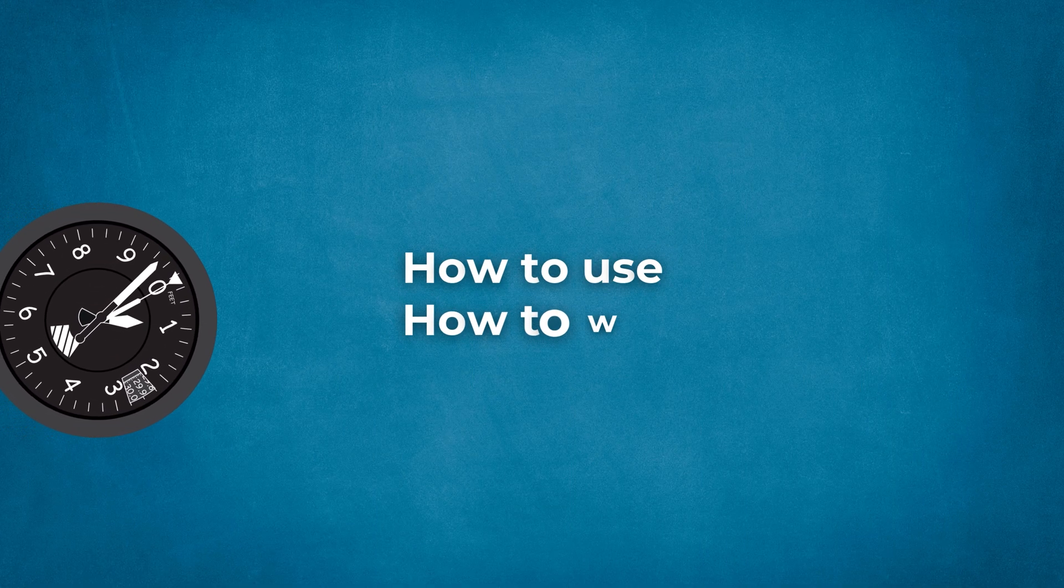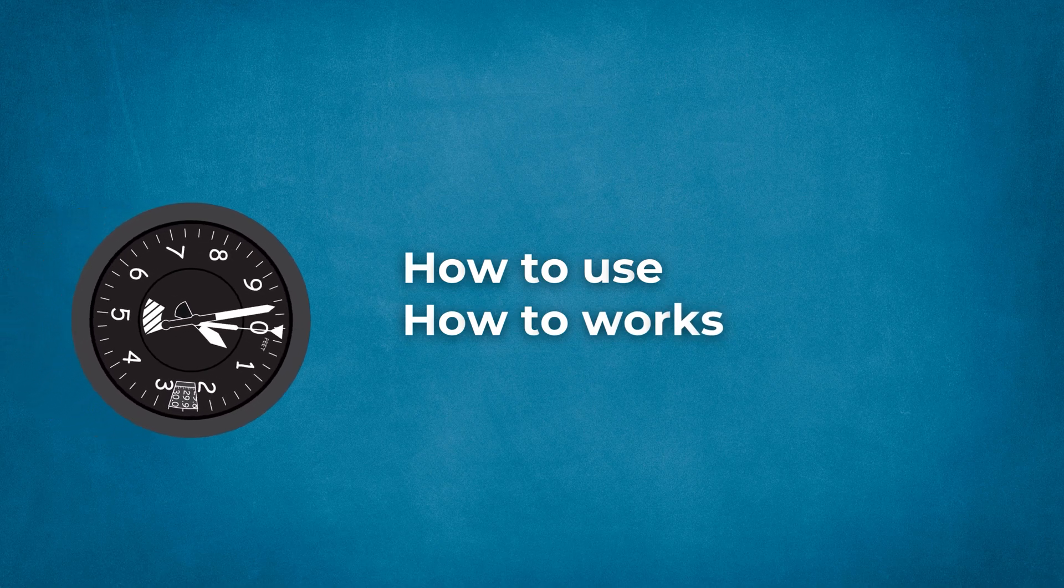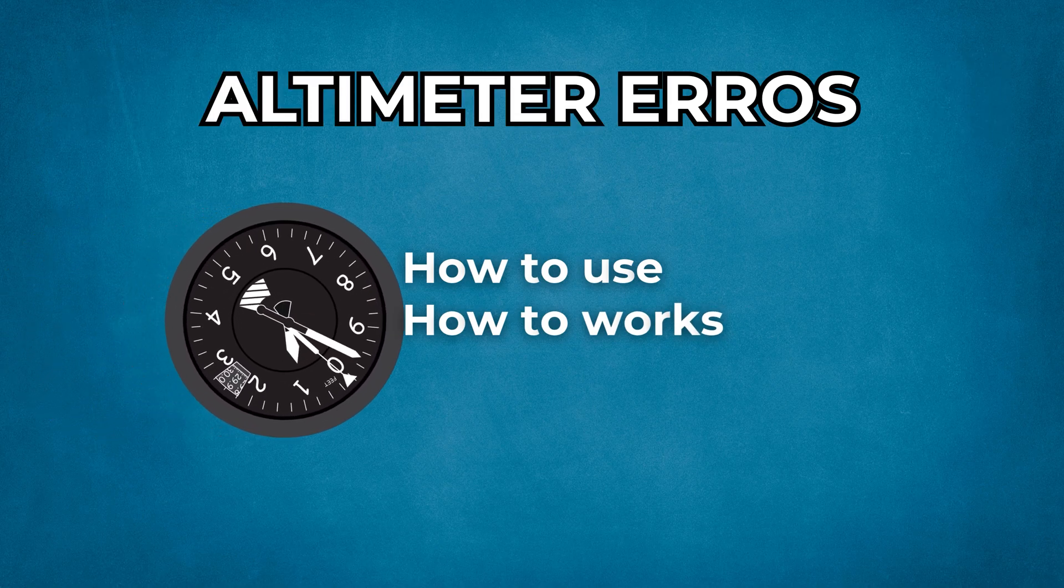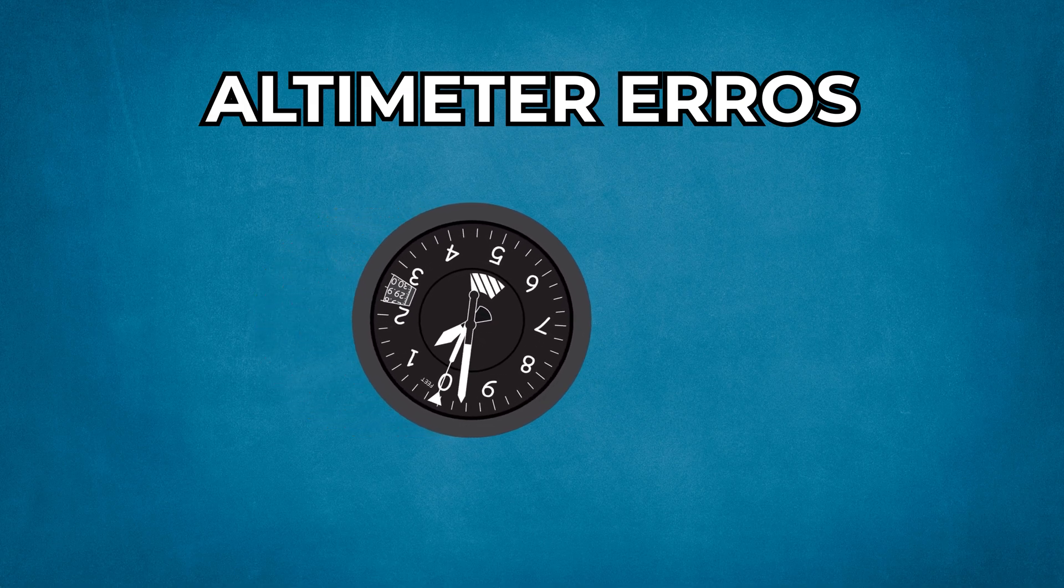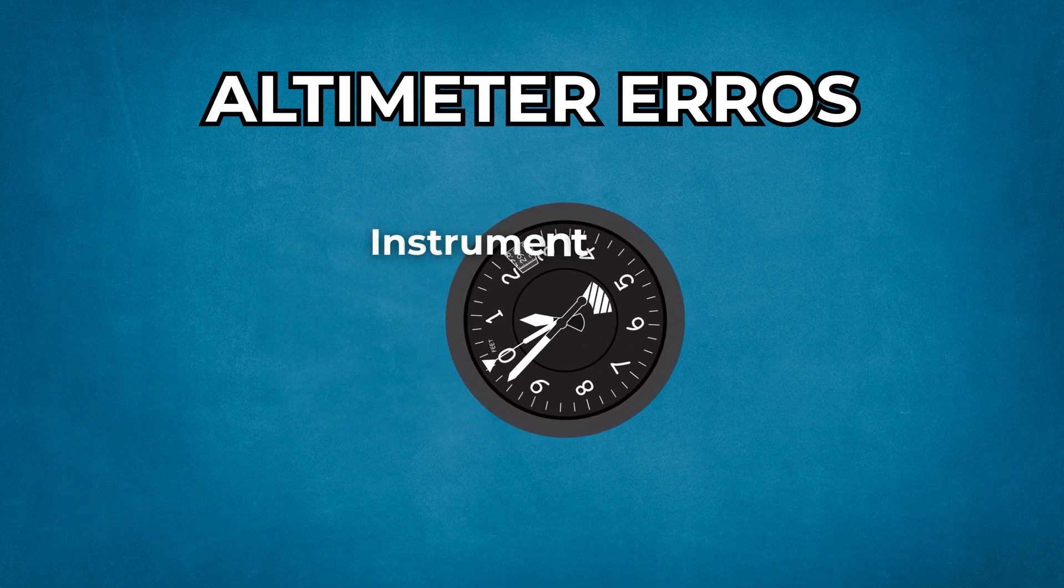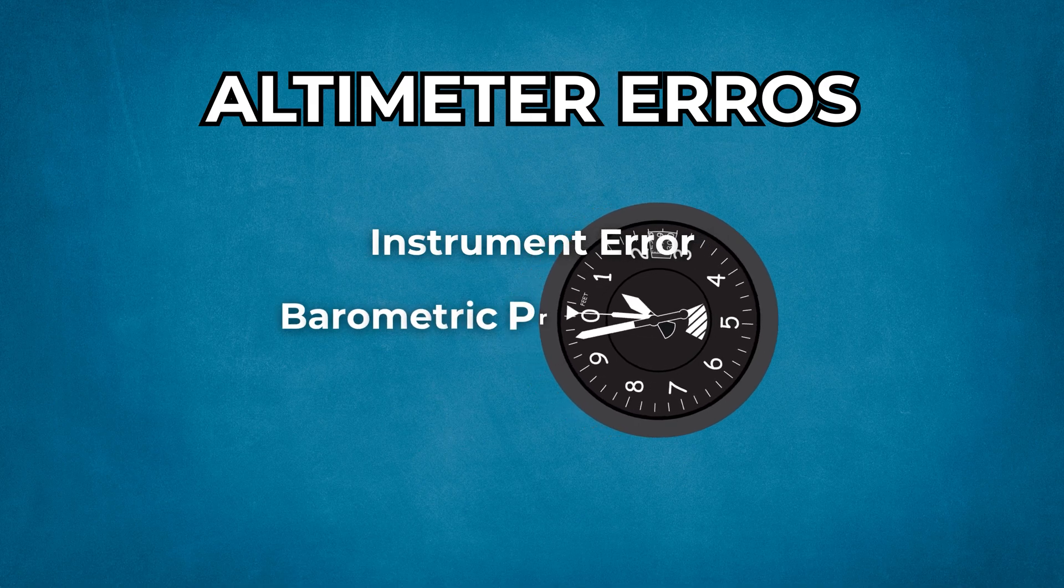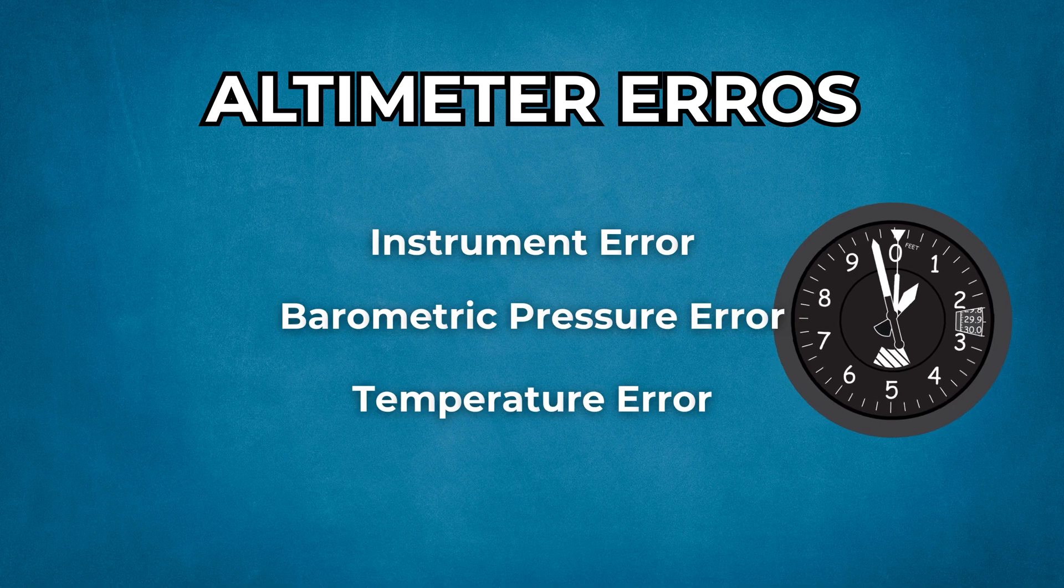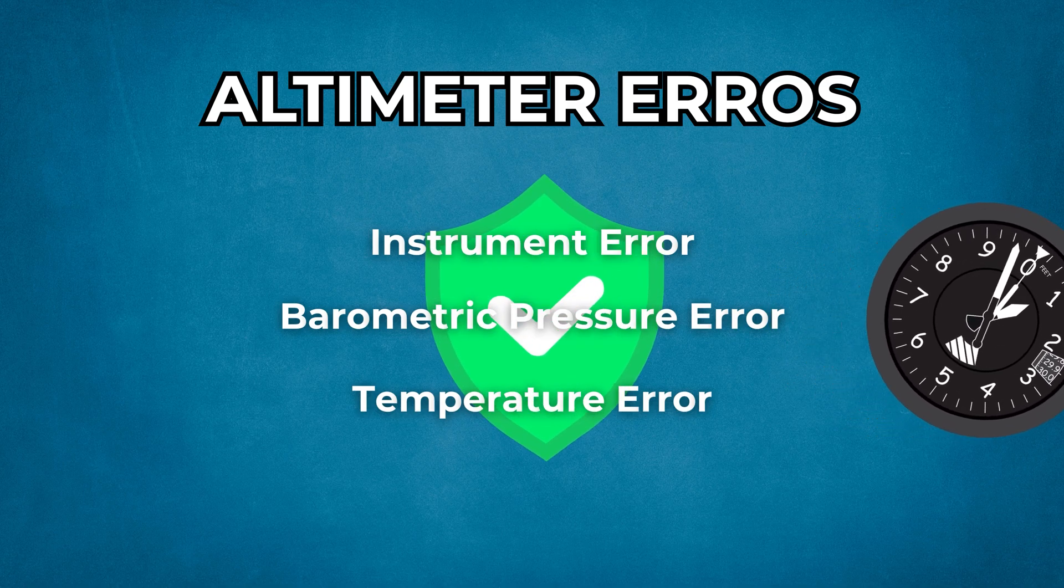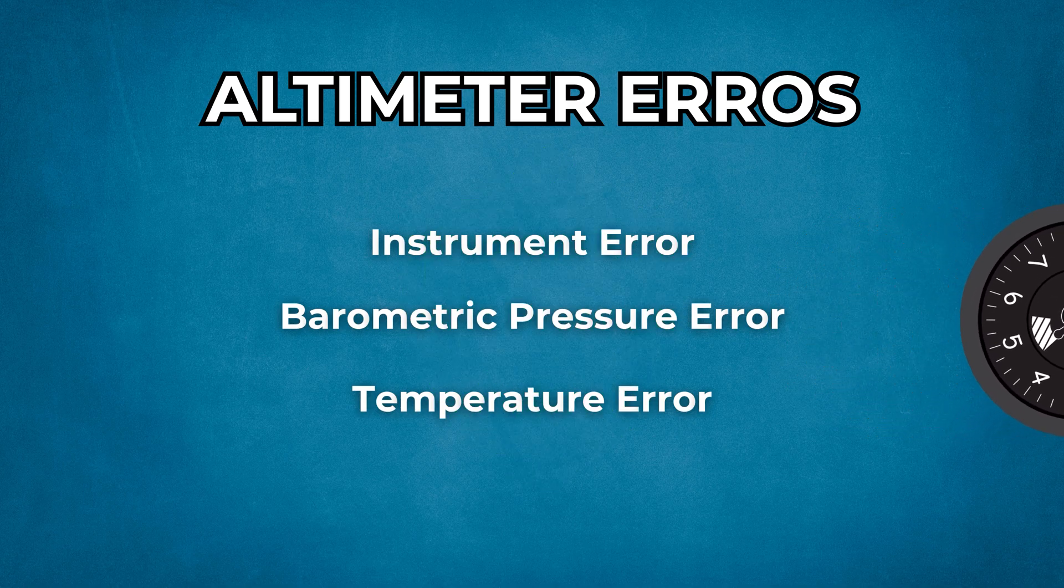Until here, we learned how to use and how an altimeter works. Now we are looking at altimeter errors. Altimeters have three fundamental errors. These are instrument error, barometric pressure error, and temperature error. Understanding these is key for safe altitude awareness. Let's unpack each one step by step.